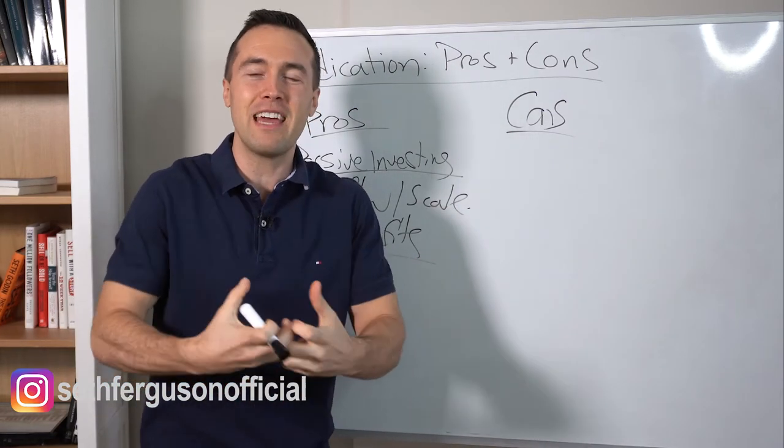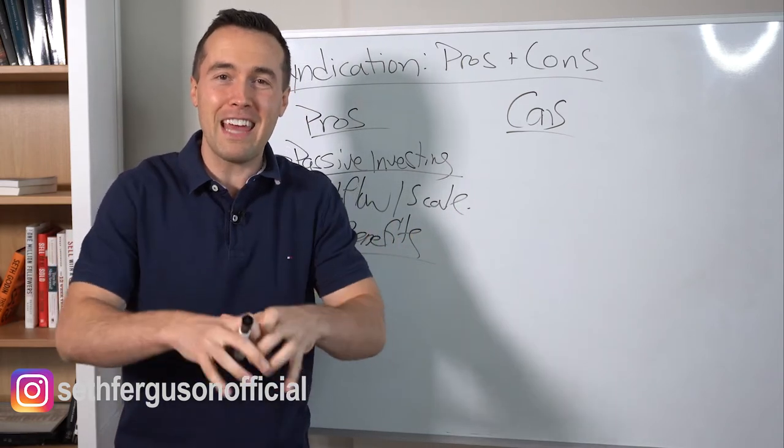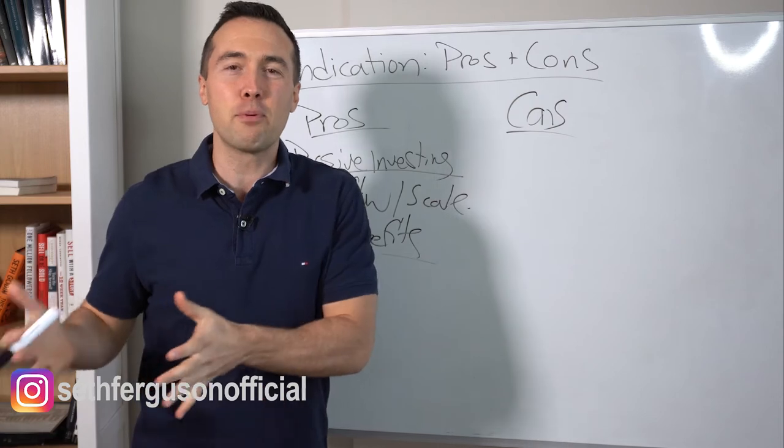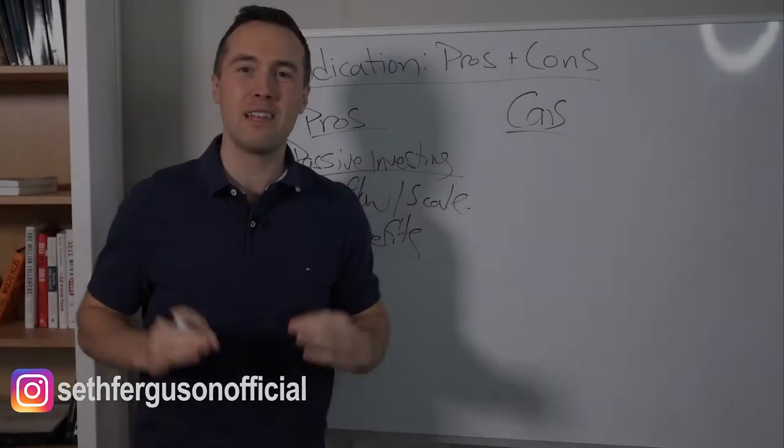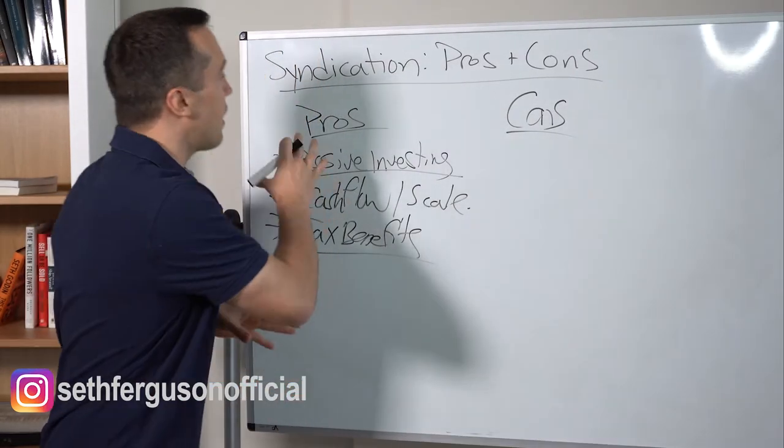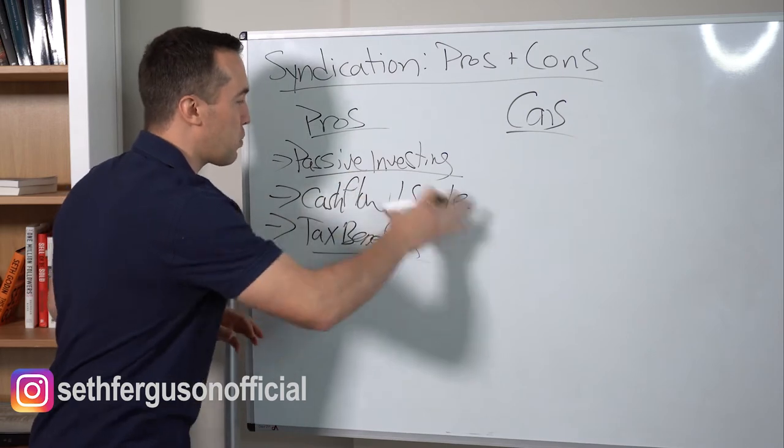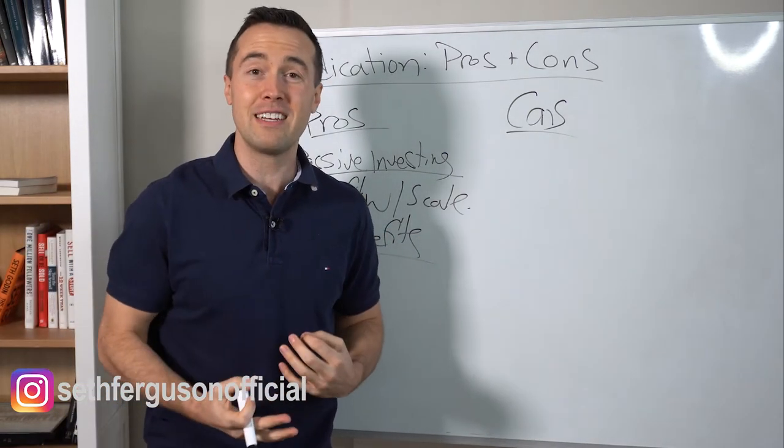You're basically stripping out everything that's not related to the building and the actual land itself and depreciating it right up front to give you paper losses. And that will significantly reduce your tax liability. These come about because of syndication and the scale is working in your favor.